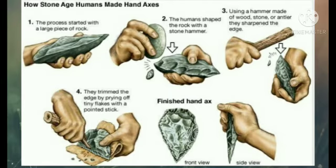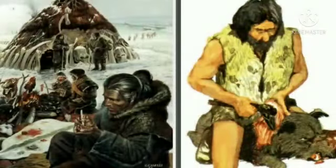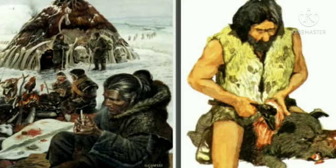During the Old Stone Age, early humans made flint tools. They made small stones into tools that helped them in getting food and cooking.